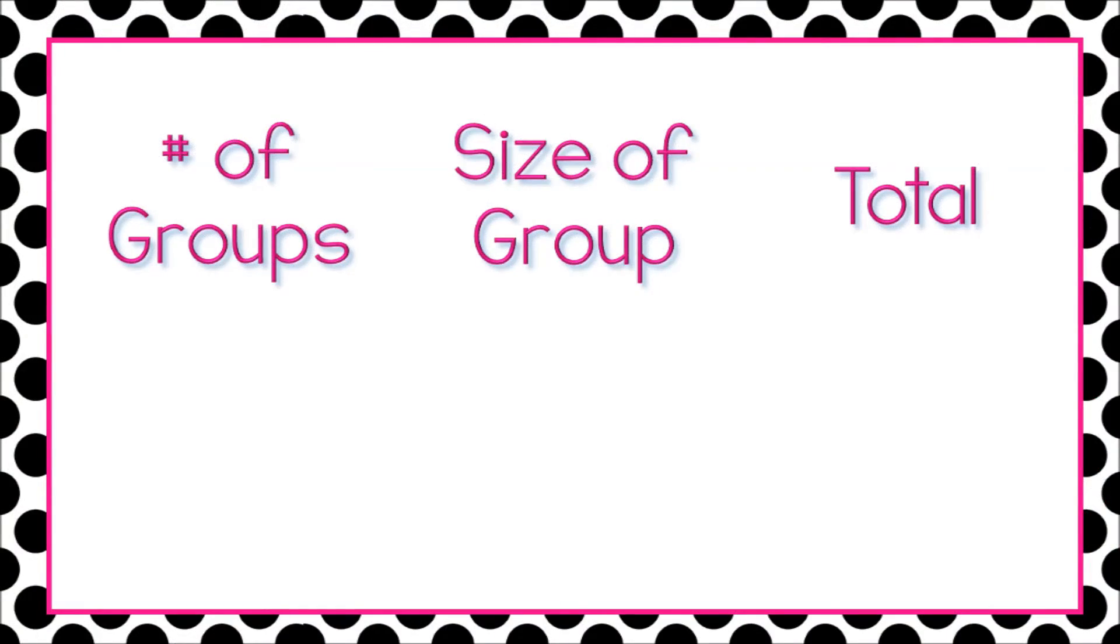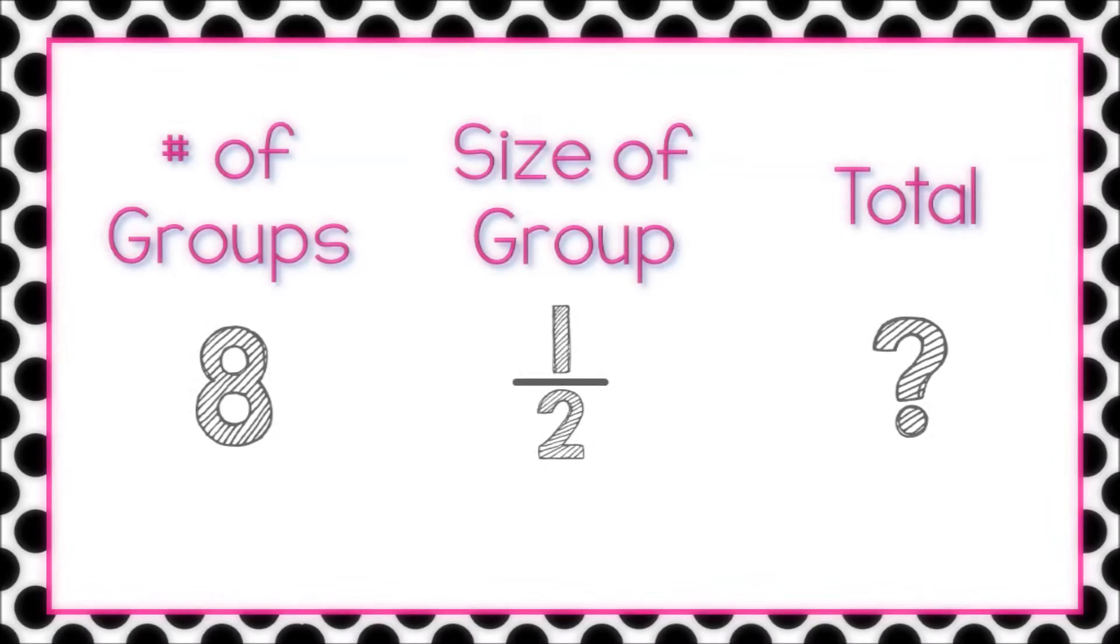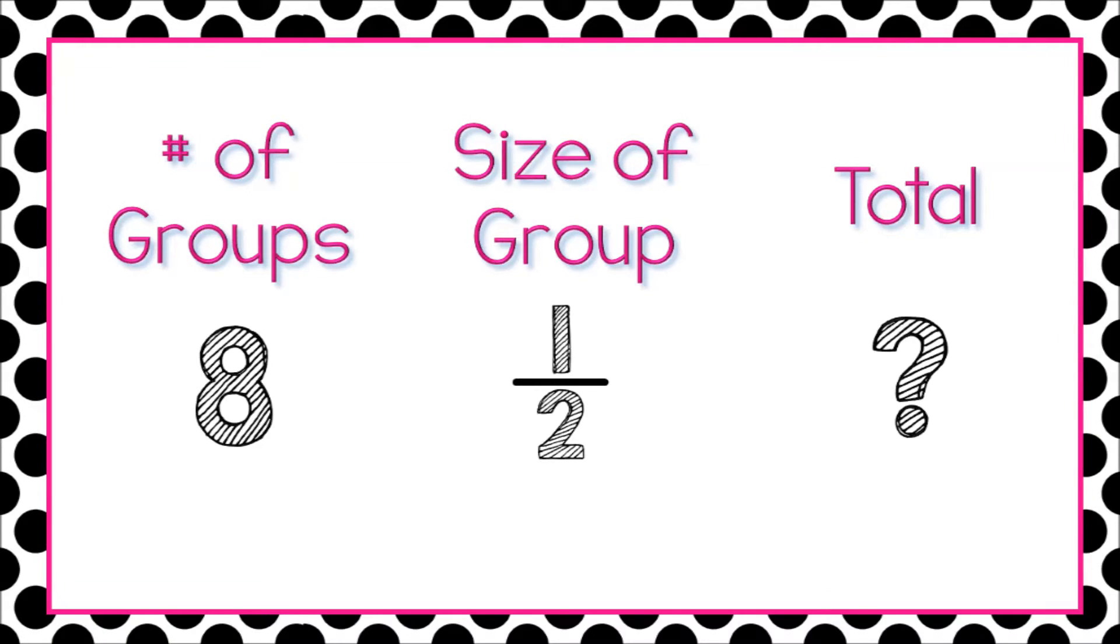Thanks, Ebony. In most multiplication and division problems, there are three parts: the number of groups, the size of each group, and the total. If we don't know the total, we multiply, as in eight groups of one-half is four. However, if we know the total but don't know the number of groups or the size of each group, we divide.